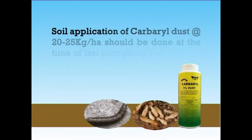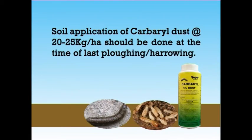To avoid incidence of termites and cutworms, which generally pose a serious threat on light textured soils of North India, soil application of carbaryl dust at the rate of 20 to 25 kg per hectare should be done at the time of last plowing or last harrowing.